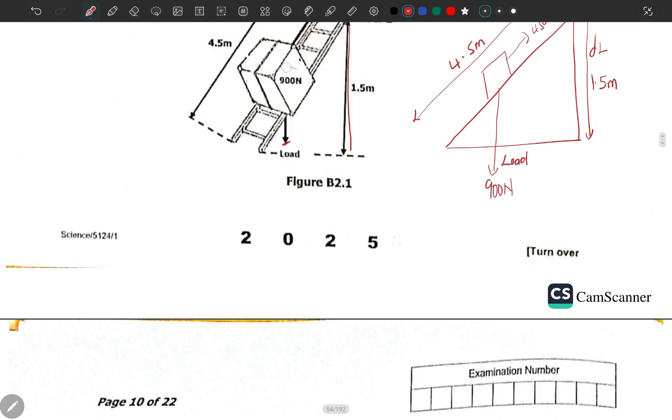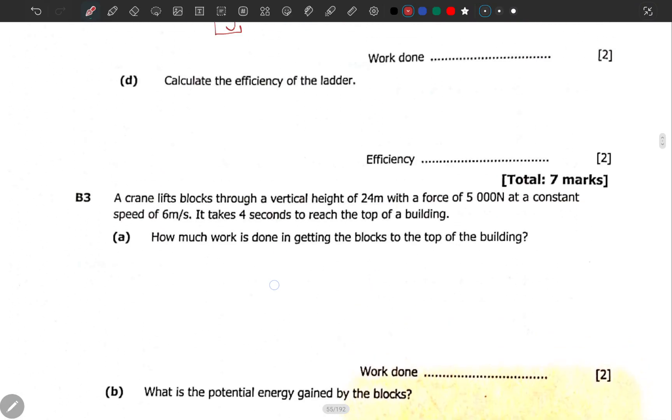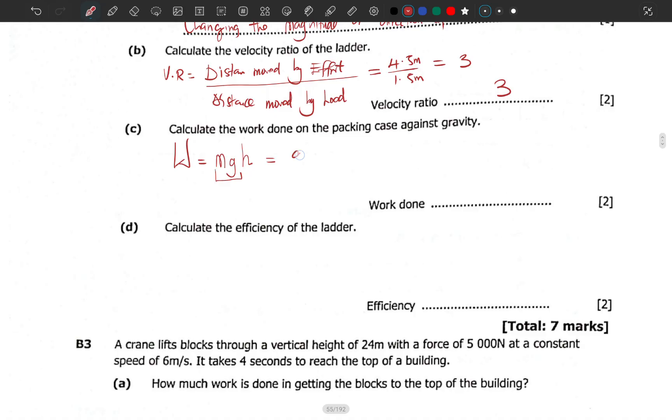And the height is 1.5. We have 900 newtons multiplied by 1.5 meters. This will give you, it's supposed to be Newton there, this will give us 1350 joules. Some of you miss units, you are gone.